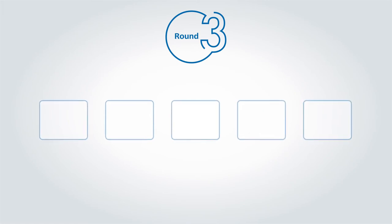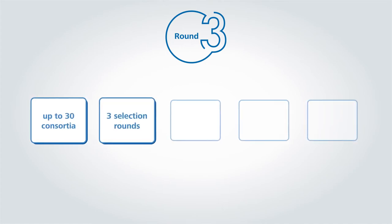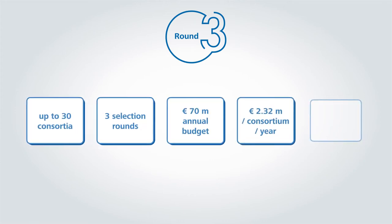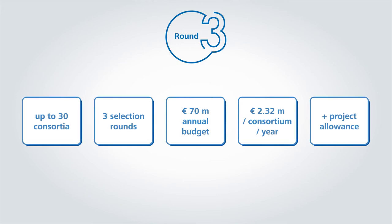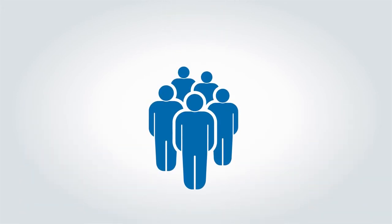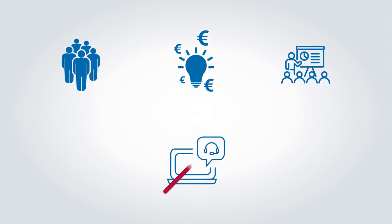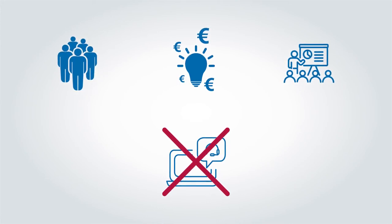To facilitate the decision-making process, we've compiled a few statistics and background information to share with you. In establishing the NFDI, up to 30 consortia can be funded over three selection rounds, with an annual budget of €70 million for all consortia. This corresponds to approximately €2.32 million per consortium per year plus a project allowance. Items eligible for funding include staff, classified into categories according to salary level, which may include non-scientific staff, as well as operating costs, workshops, etc. Extensive hardware support cannot be funded, and institutions represented in consortia are expected to contribute a portion of the required funds themselves.